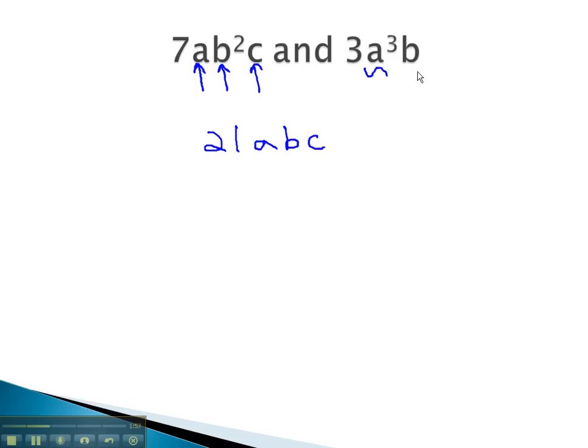Notice in the second, the a and b are repeats. There is no need to list them again. We will simply use the highest exponent that shows up on each factor.